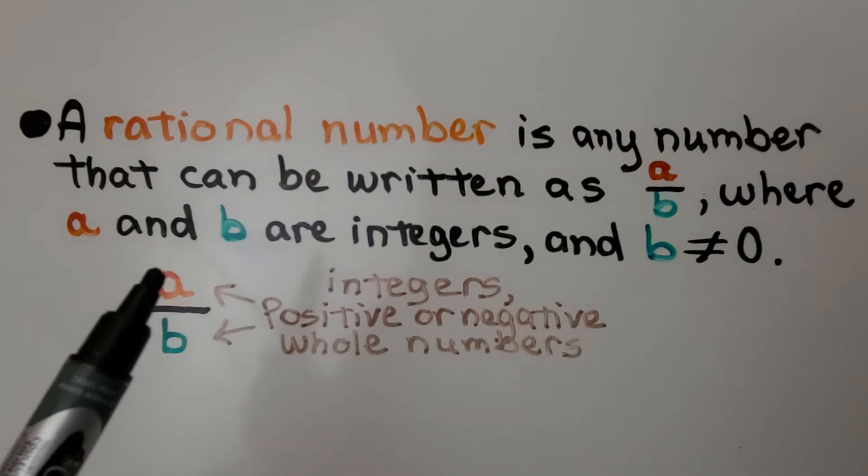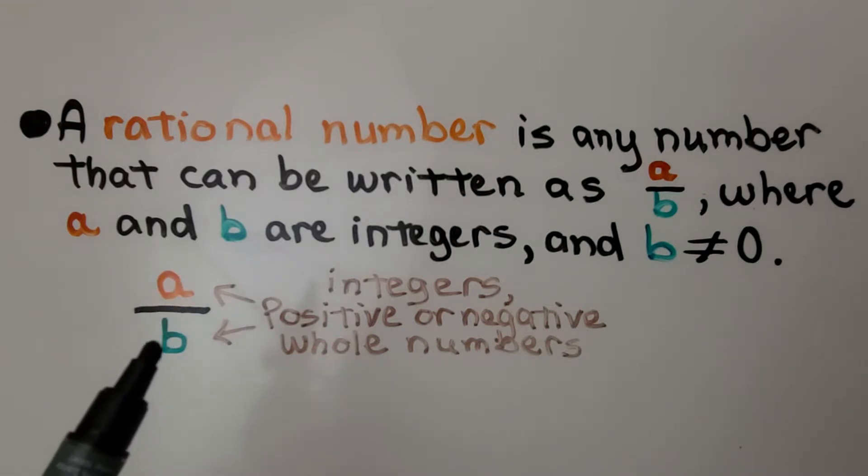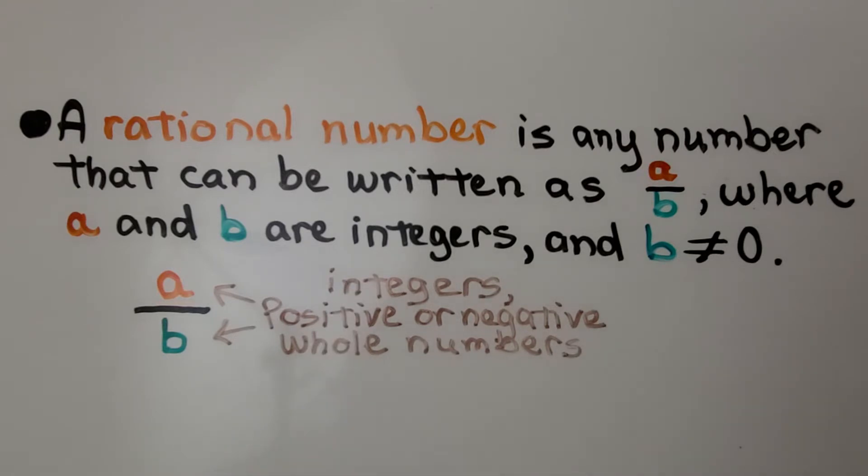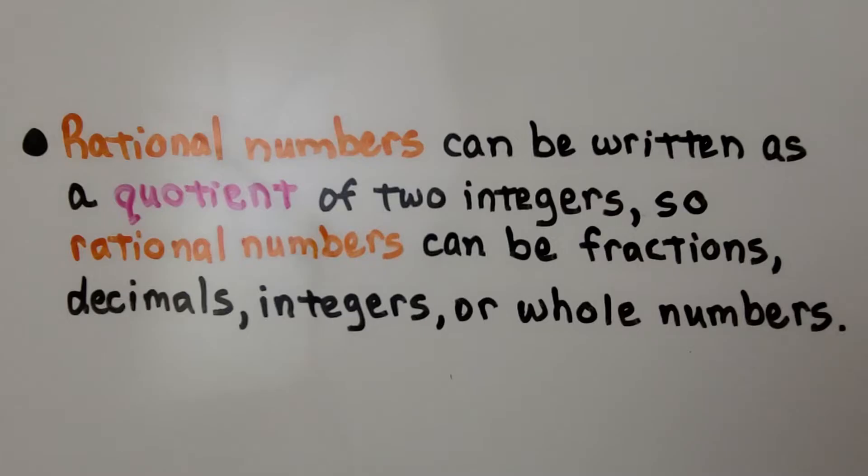So we can write it as a over b, like a fraction. And integers, remember, are positive or negative whole numbers. So rational numbers can be written as a quotient of two integers. Rational numbers can be fractions, decimals, integers, or whole numbers.